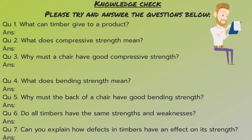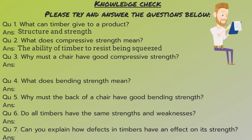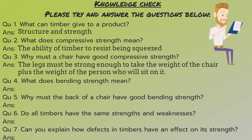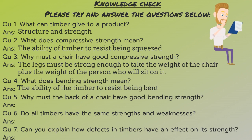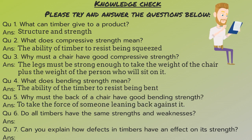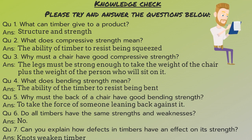Okay, so the answer to question one is structure and strength. Number two: the ability of timber to resist being squeezed. Number three: the legs must be strong enough to take the weight of the chair plus the weight of the person who is sitting on it. Number four: the ability of the timber to resist being bent. Number five: to take the force of someone leaning back on it. Number six: no. And number seven: knots weaken the timber.